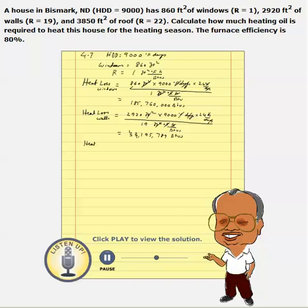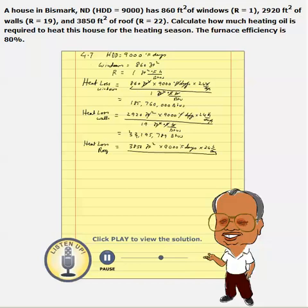Now, heat loss through the roof. The area of the roof is 3,850 square feet, times 9,000 degree days, times 24 hours per day, divided by the R-value of 22 for the roof. Canceling out the units, the heat loss through the roof is 37,800,000 BTUs.